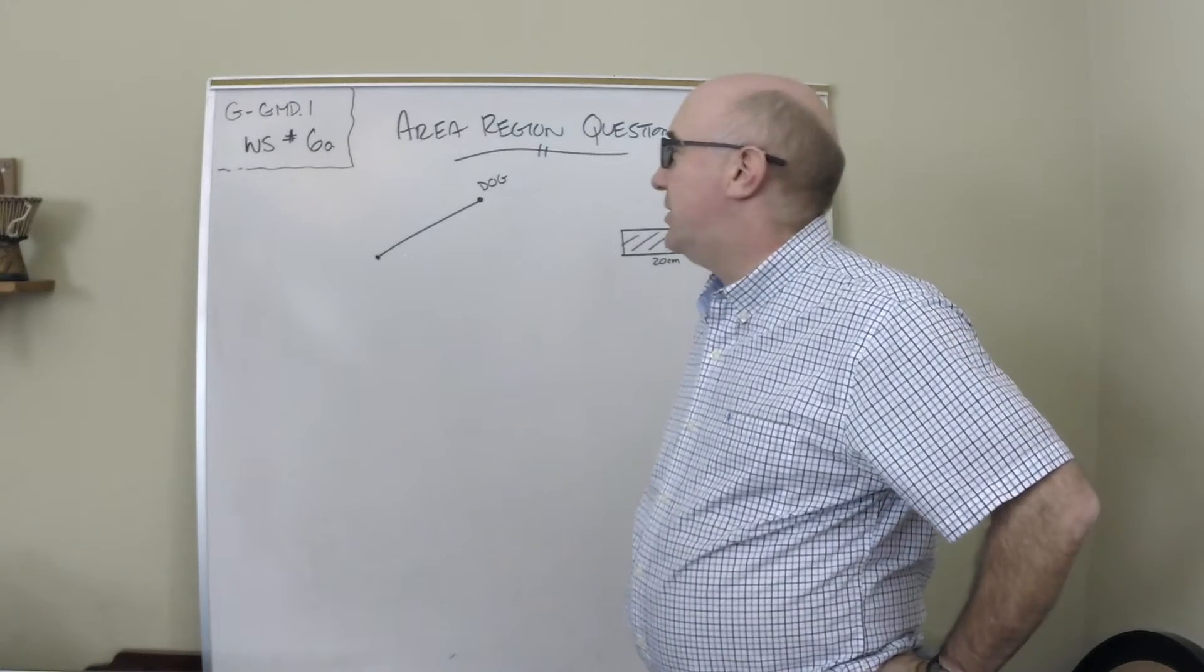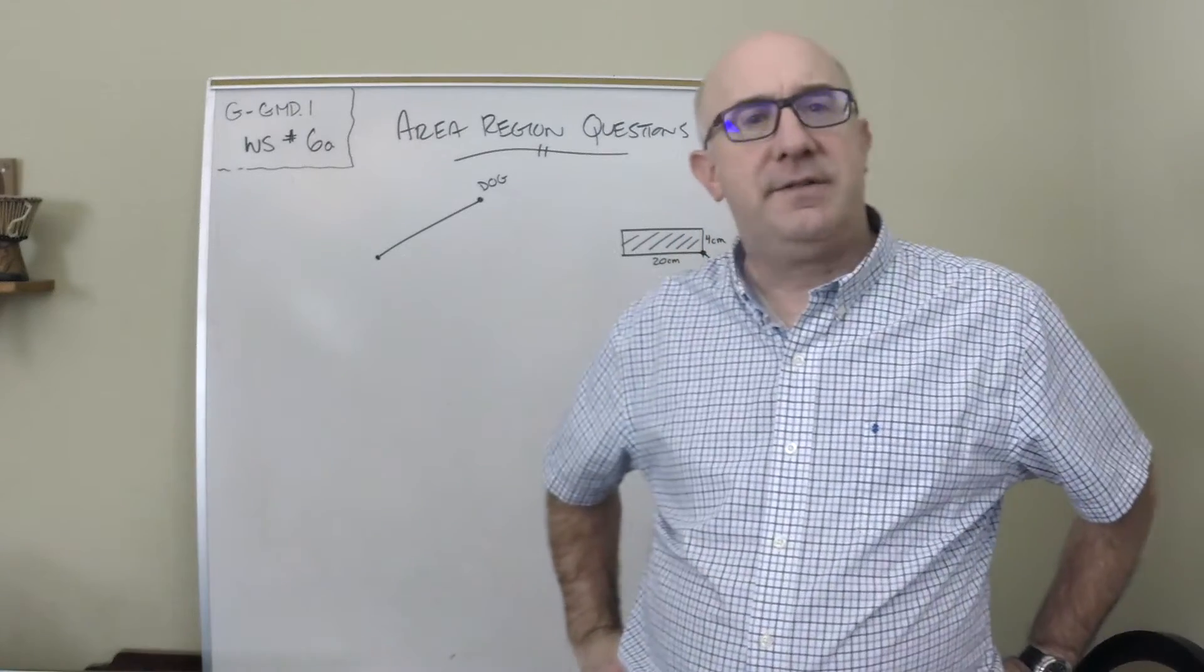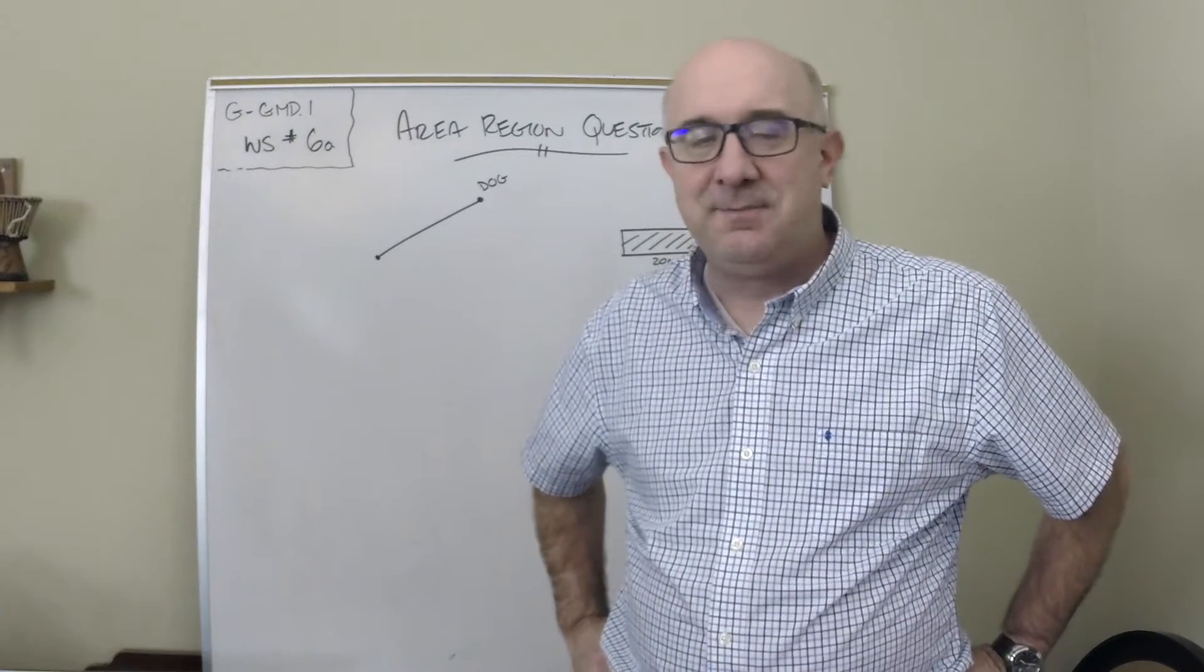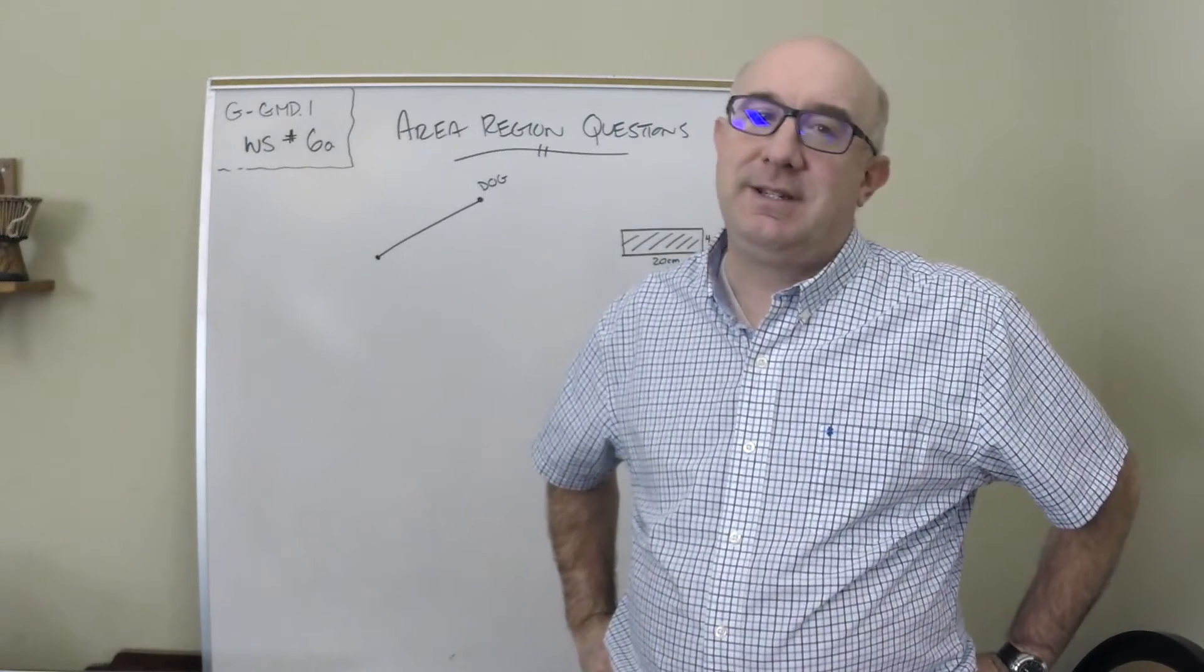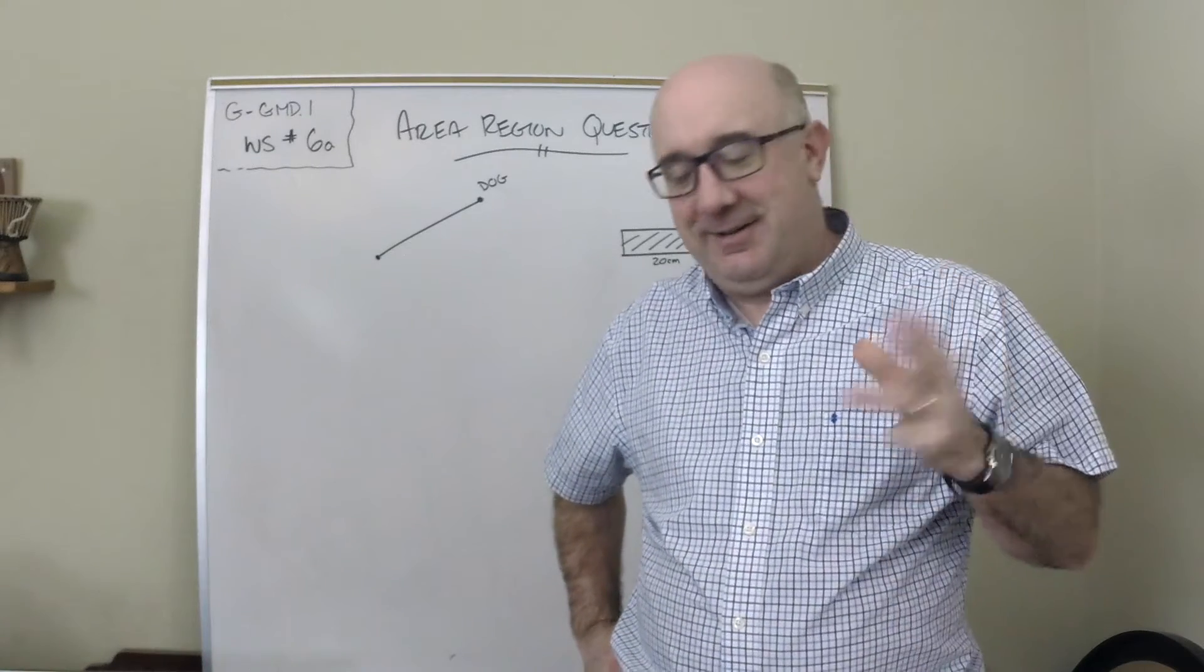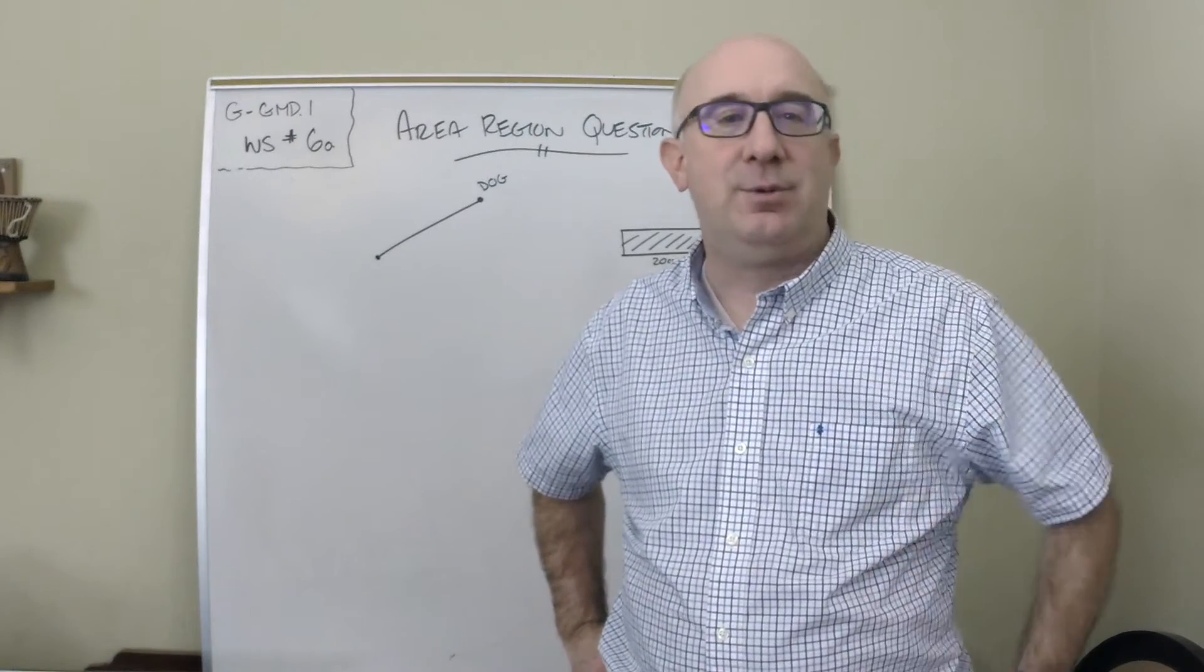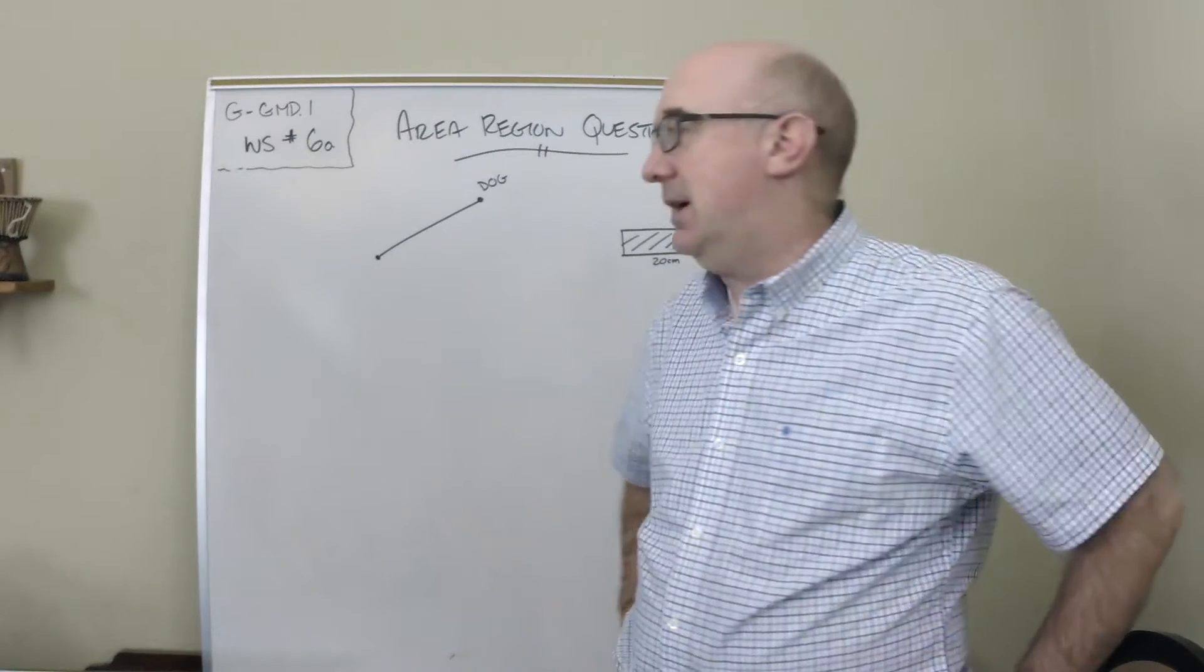Alright, let's take a look at worksheet 6a on area of sectors and circles. I have to admit this is some of my favorite fun stuff - this idea of a region taken up by a tethered animal, whether a goat or a dog.